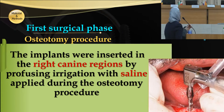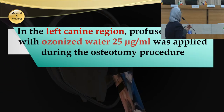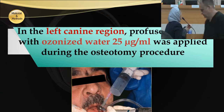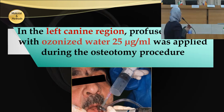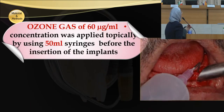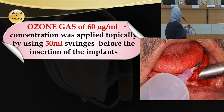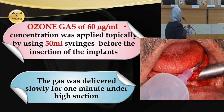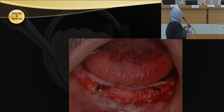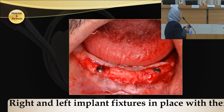In the surgical phase, implants in the right canine region were inserted with perfusing irrigation using saline applied during the osteotomy procedure. In the left canine region, perfusing irrigation with ozonized water at 25 micrograms per milliliter was applied during osteotomy. Ozone gas at 60 micrograms per milliliter concentration was applied topically using a 50 milliliter syringe before implant insertion. The gas was delivered slowly for one minute under high suction. This figure shows right and left implant fixtures in place with their cover screws.